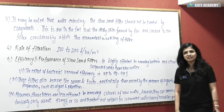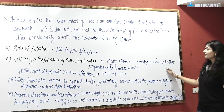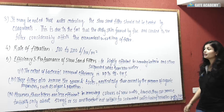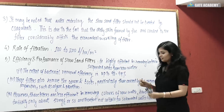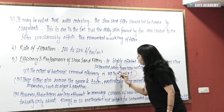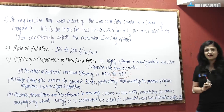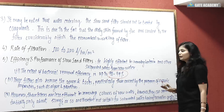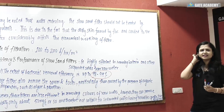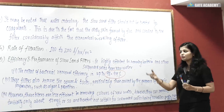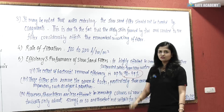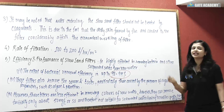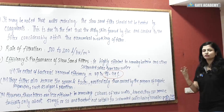Regarding the efficiency and performance of slow sand filters: they are highly efficient in removing bacteria and other suspended solids from raw water. The extent of bacterial removal efficiency is 98 to 99 percent, sometimes up to 100 percent. These filters can also remove odor and taste, especially when algae and plankton are present and there are organic impurities. However, they are less efficient in removing color from raw water compared to rapid sand gravity filters.